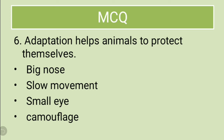Similarly, other animals like giraffe and zebra — their colors match with the surrounding. Though a giraffe is very big, it has stripes that help it hide in the surrounding. This is called camouflage. Big nose? No. Slow movement? No. Small eye? No. The answer is camouflage, as this is the adaptation that helps animals to protect themselves.